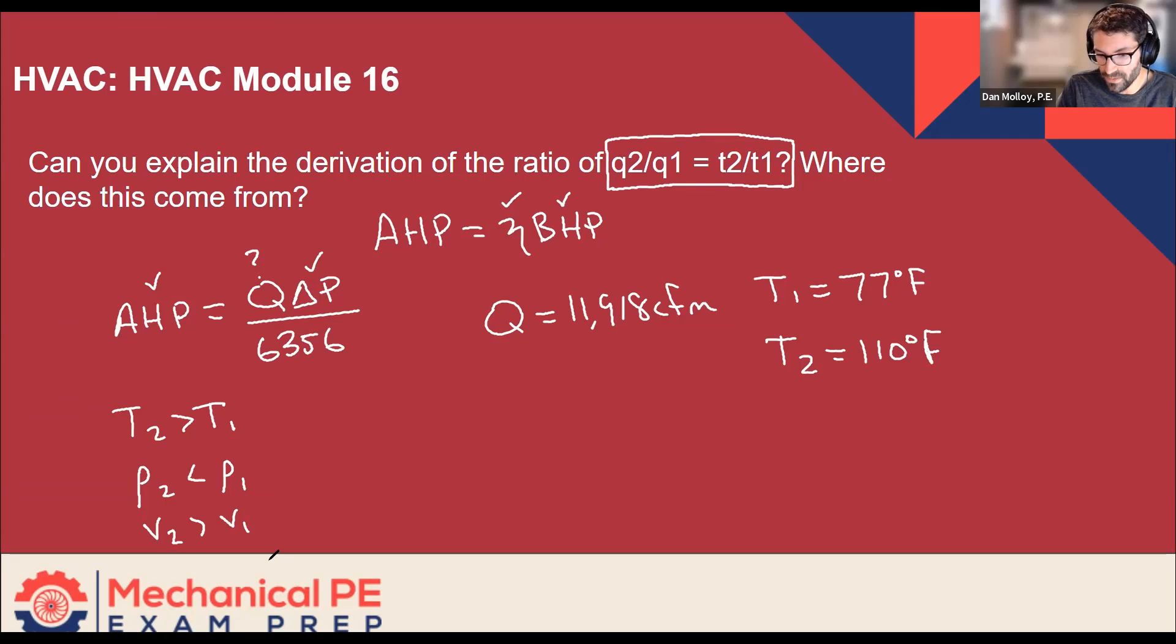And then we can even take that a step further and say the amount of mass that the fan can move is constant, right? Because power has to do with the amount of mass that it's moving. So we could say M dot equals rho Q. And then we could replace rho with one over specific volume. So Q over little v.